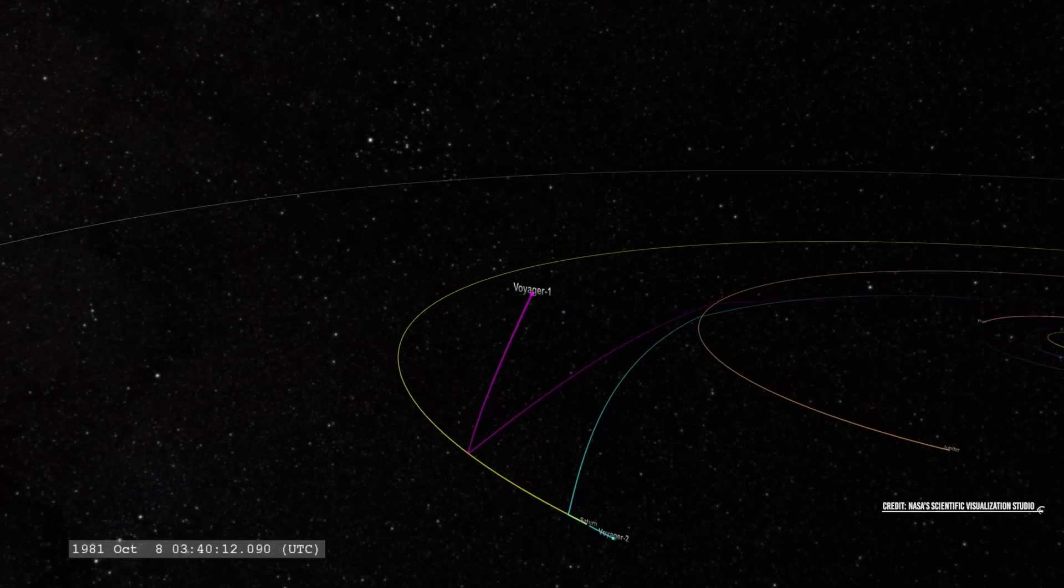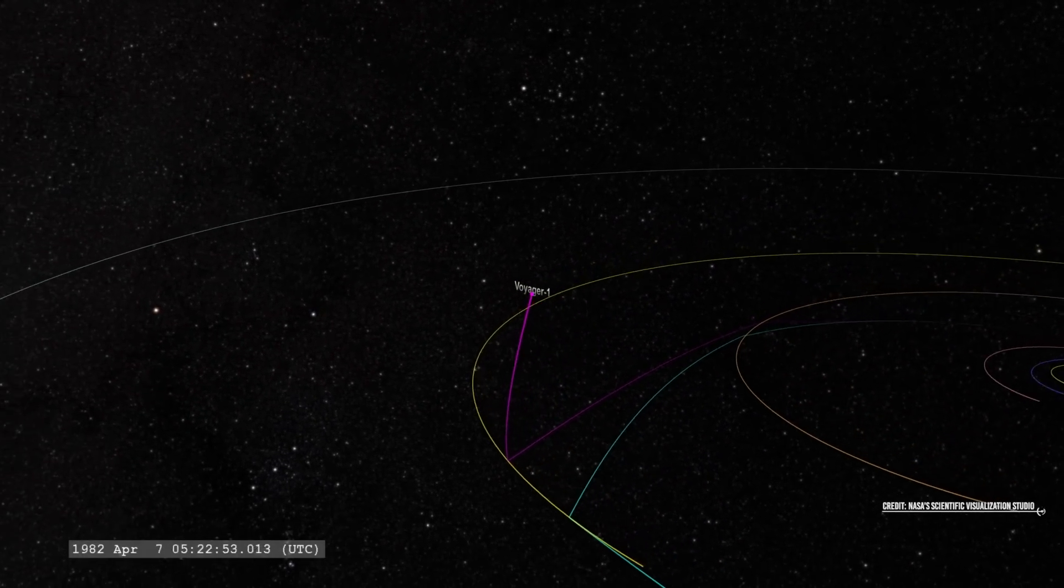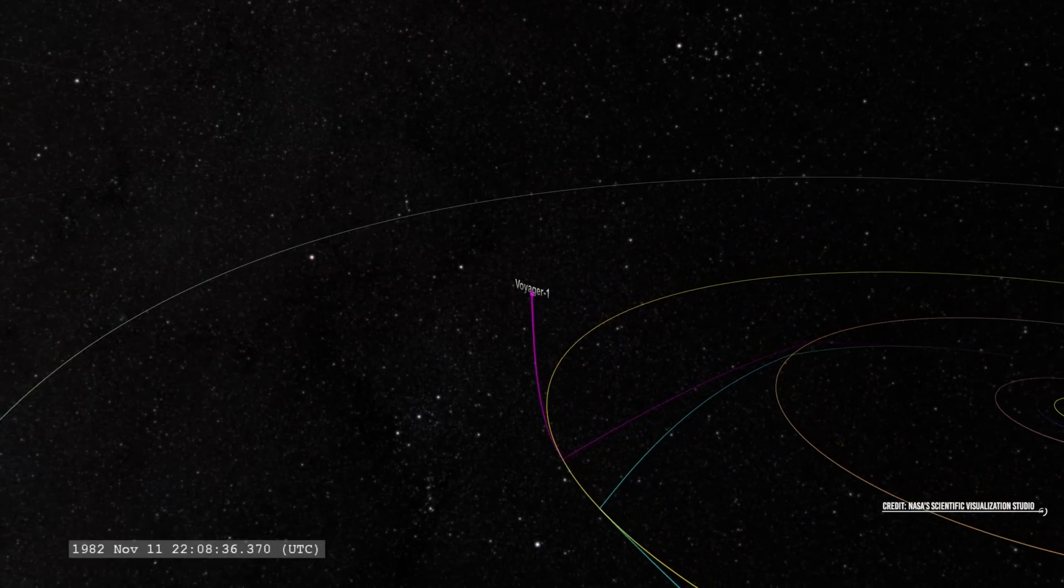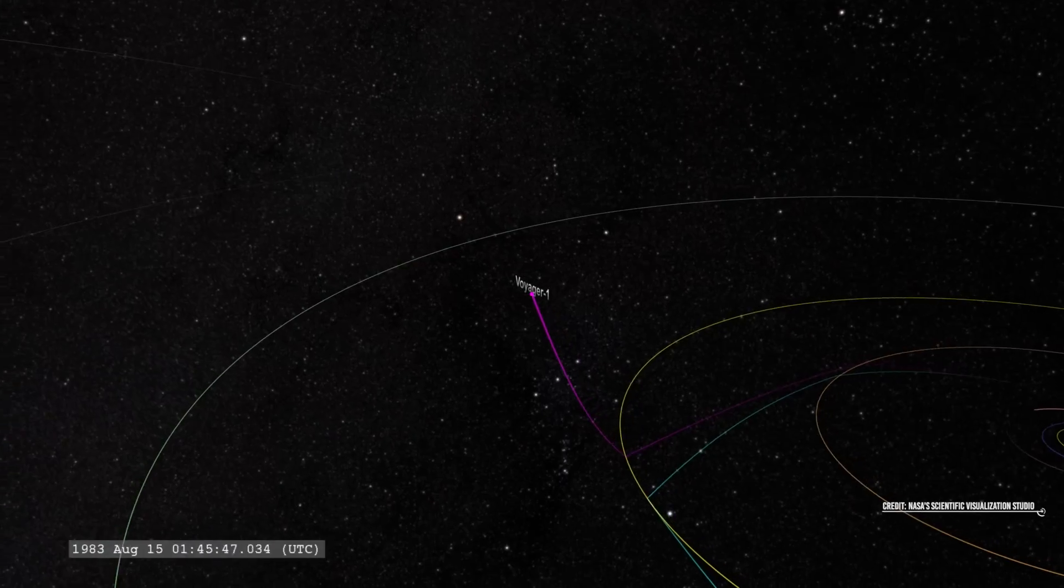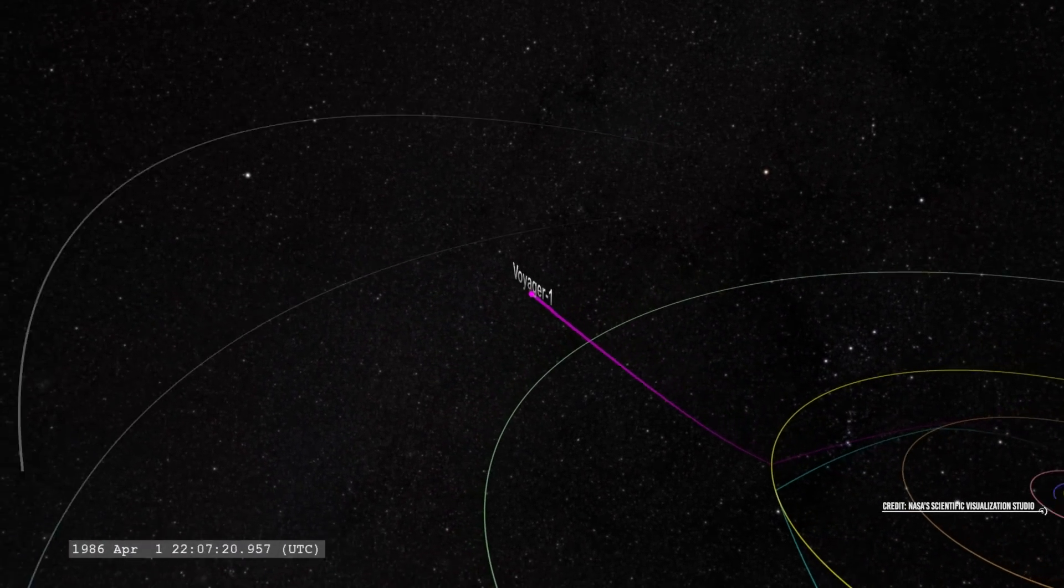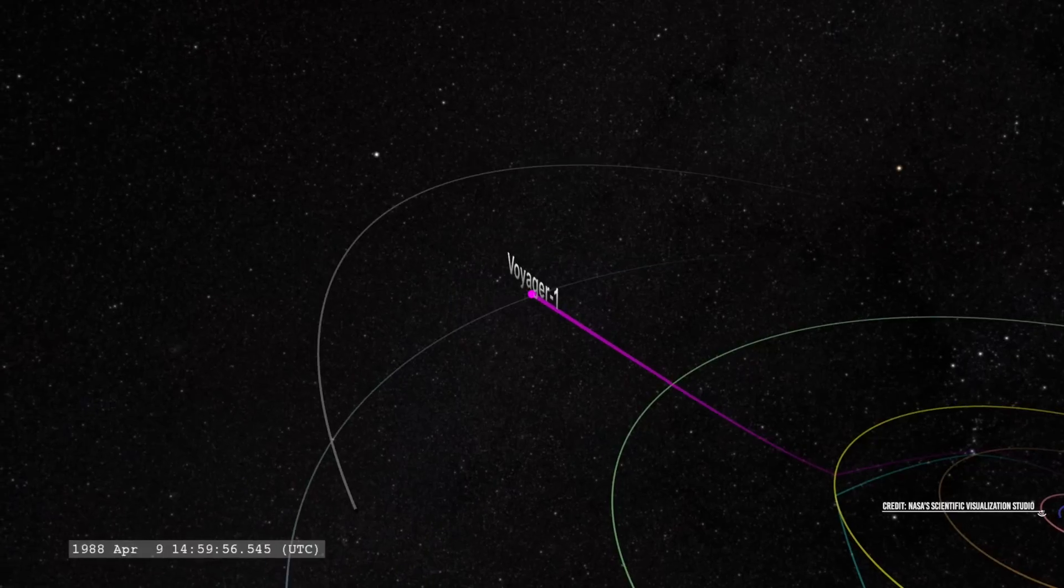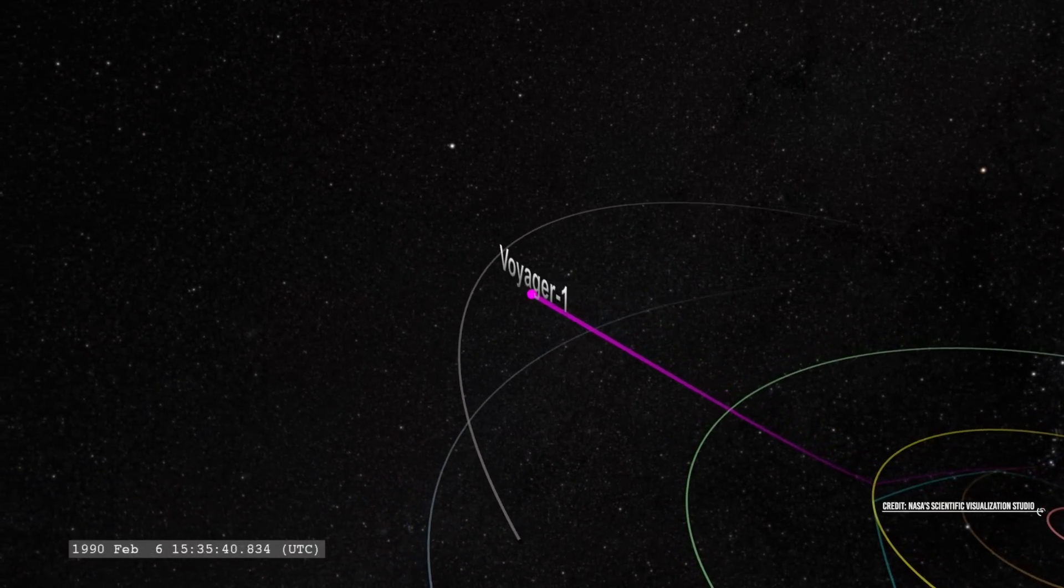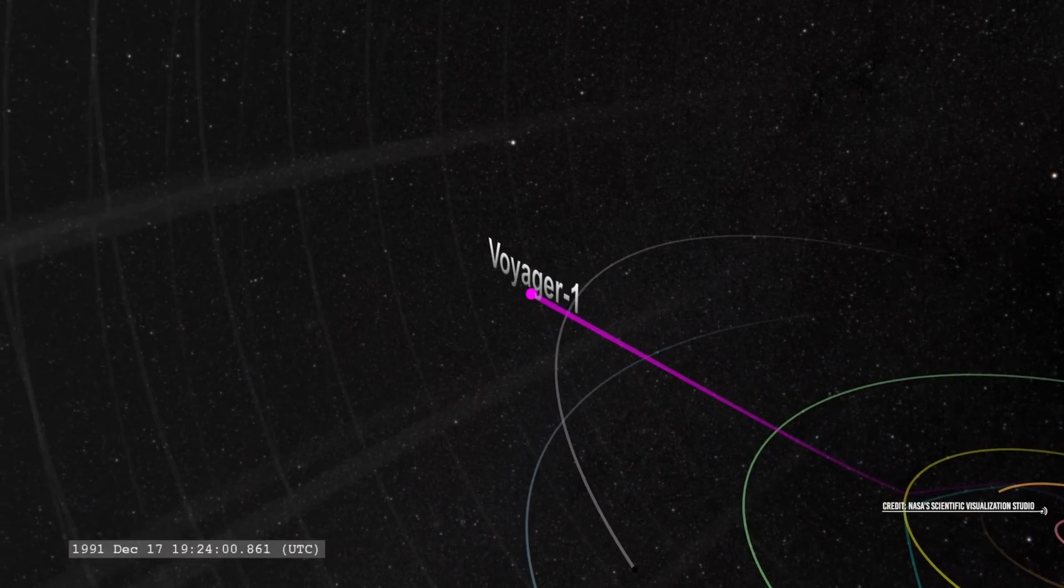In 2012, NASA announced that the Voyager 1 had managed to leave what until then was believed to be the limit of the solar system, an area called the heliopause. And then, on November 5th, 2018, Voyager 2 would follow suit and also managed to go beyond the heliopause.